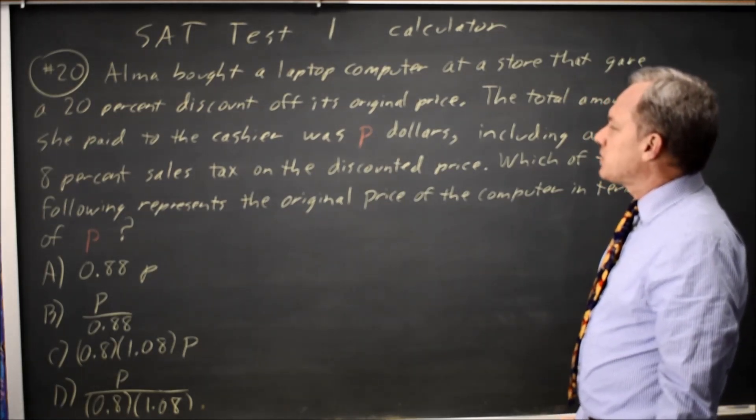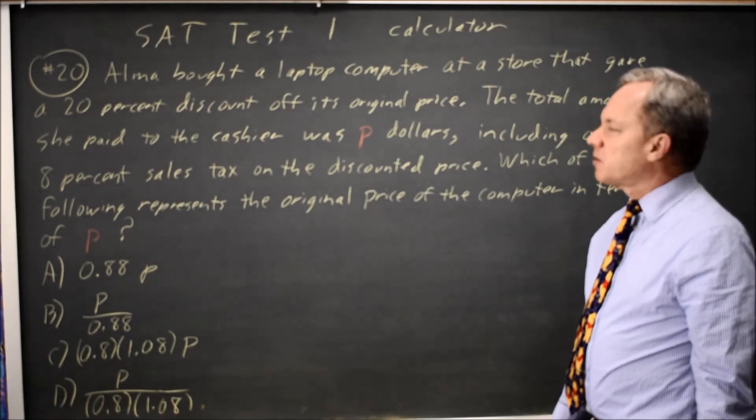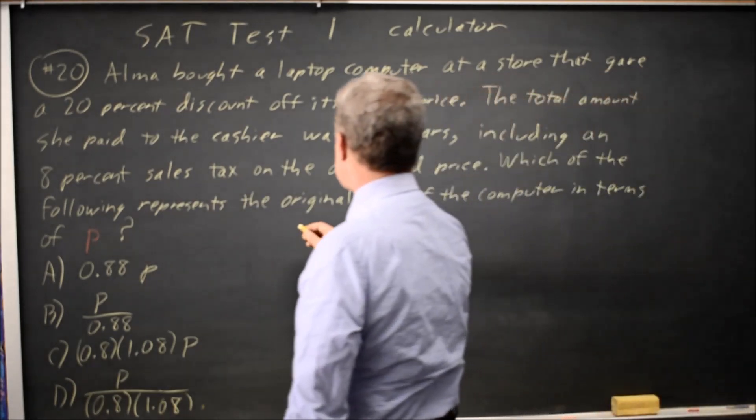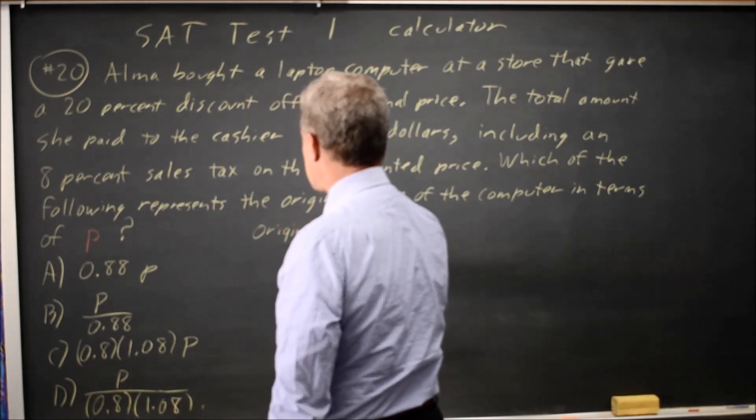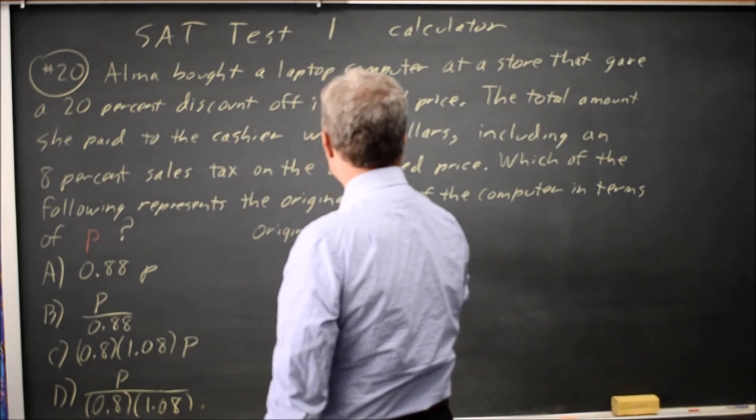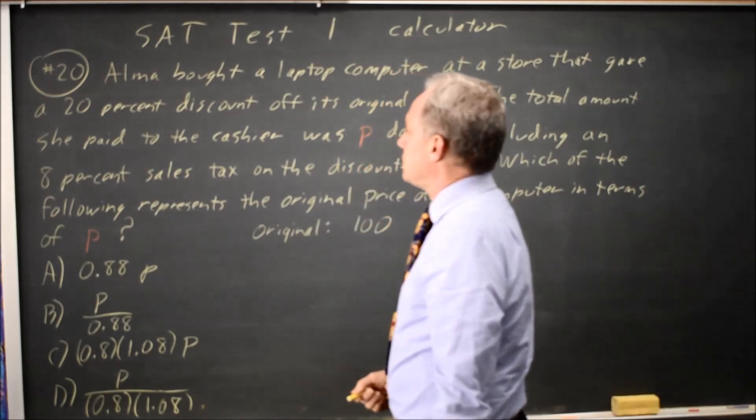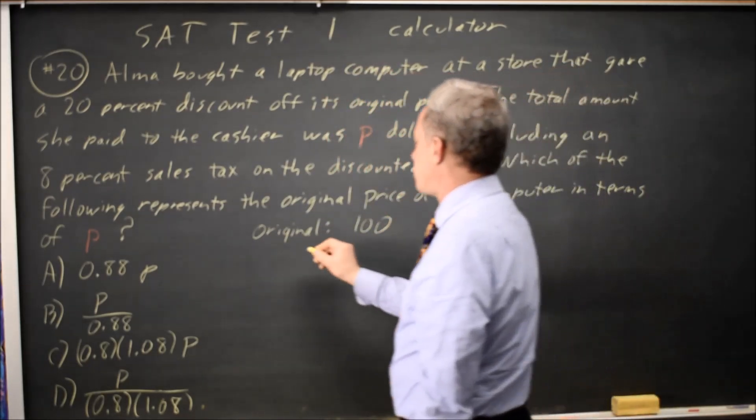We can do this algebraically, but I'm going to do it by making up numbers first. Let's choose a price for the original price. I'm going to choose $100 because it's easy to take a 20% discount off $100.